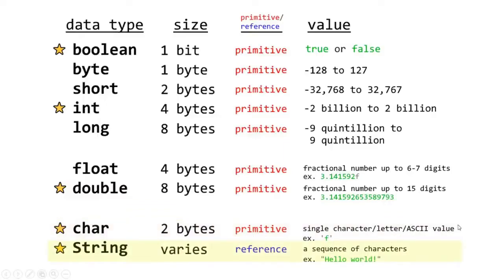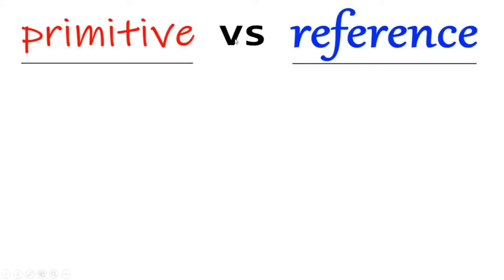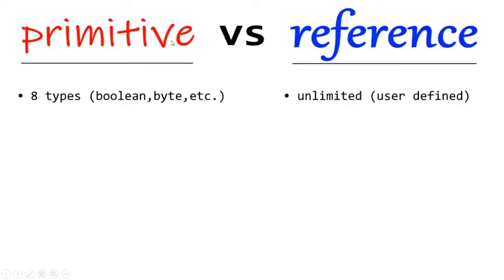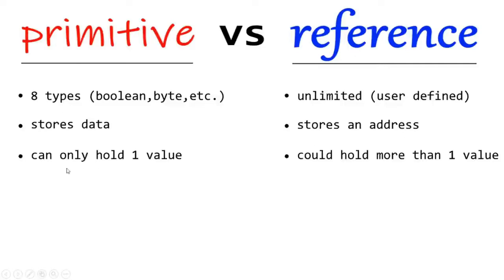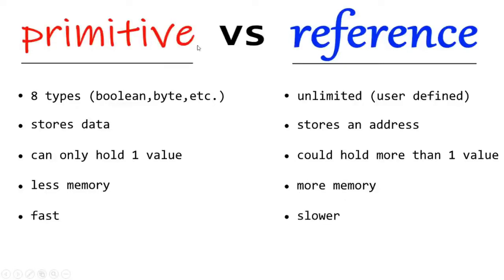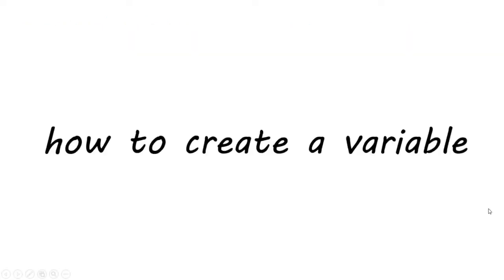Here's a quick comparison between primitive and reference data types. There are eight primitive data types — boolean, byte, short, integer, long, and others we discussed. Reference data types like strings are unlimited in number because they are user-defined. Primitives store data; reference data types store an address. Primitives can only hold one value; reference data types can hold more than one. Primitives use less memory and are faster compared to reference data types, which use more memory and are slower.